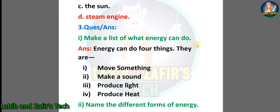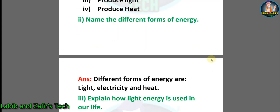Now I am going through some question answers that are given in the book; the answers are written by myself. Number one: make a list of what energy can do. Answer: energy can do four things — number one: move something, number two: make a sound, number three: produce light, number four: produce heat.